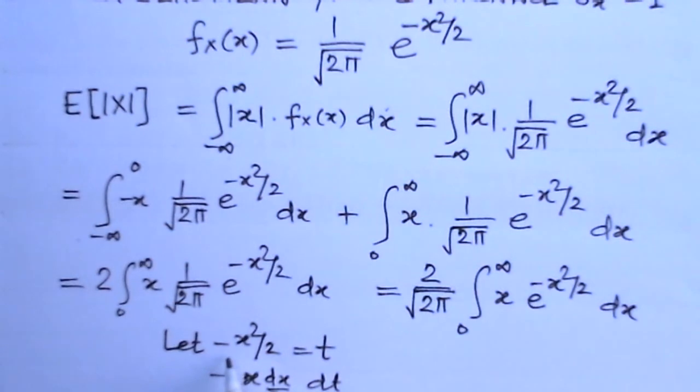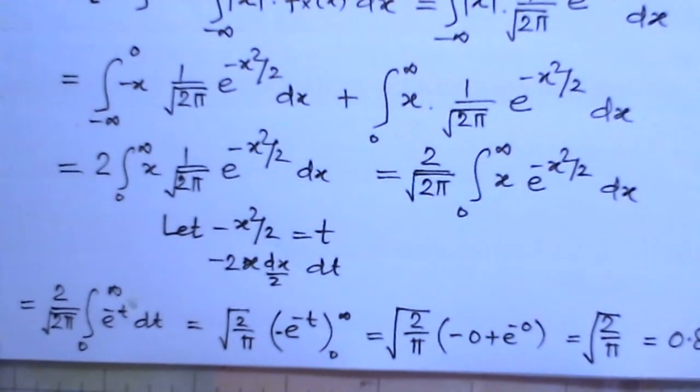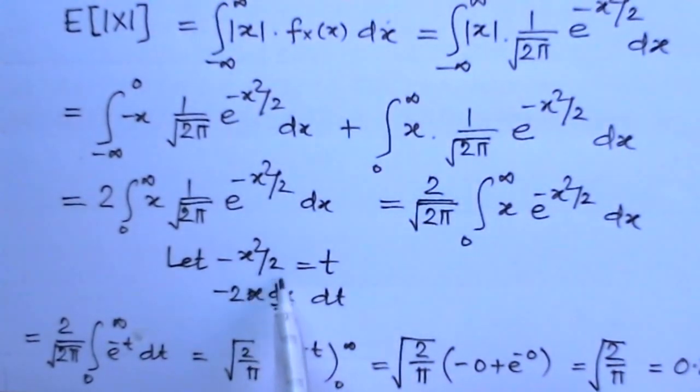We substitute minus x squared by 2 equals to t. So minus 2x dx by 2 would be dt. Substituting here, 2 over root 2 pi, 0 to infinity, e to the power minus t dt.